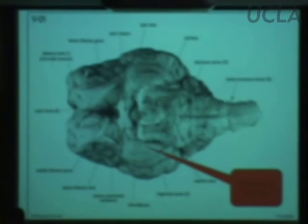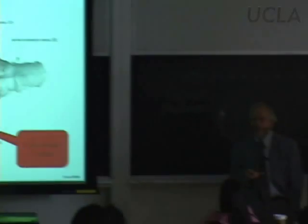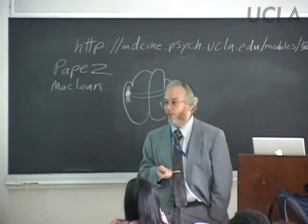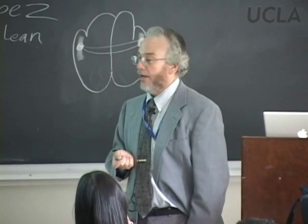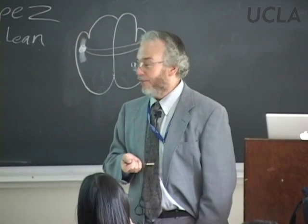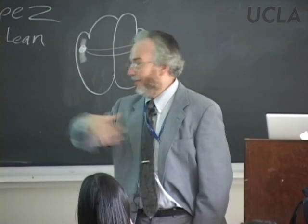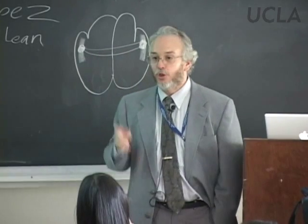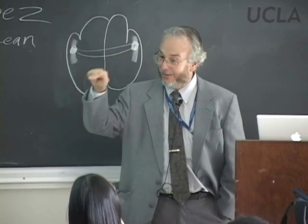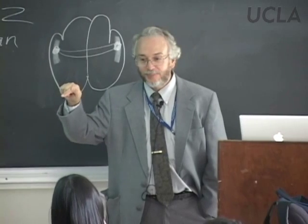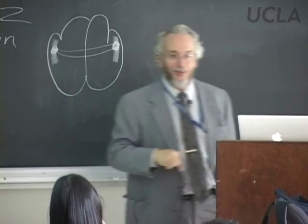When Mishkin selectively destroyed the entorhinal cortex, the monkeys had severe anterograde amnesia and really couldn't do the delayed non-matching to sample task at all. If he selectively destroyed the hippocampus, they also showed impairment, but not as severe as with entorhinal damage. H.M. had both entorhinal cortex damage and hippocampal damage. Towards the end of his life, scans showed his entorhinal cortex was gone but about two-thirds of his hippocampus was still there. So a lot of his deficit may have been due to entorhinal damage.